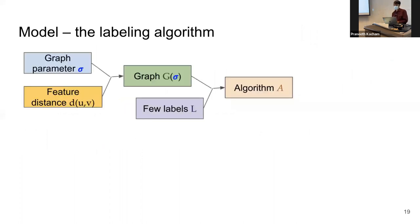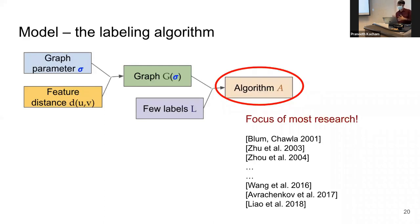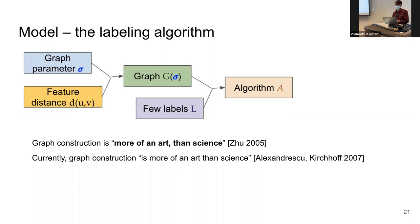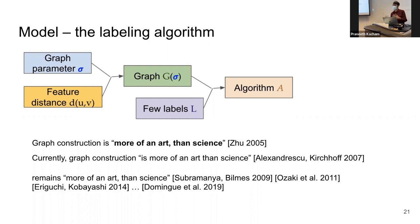Most research has focused on how to extrapolate labels given a fixed graph, and this remains an active topic. On the other hand, the question of how to build the graph has been considered more of an art than a science — this was the state about 20 years ago, and people have noted it over the years. Even today, there are no principled ways of building the graph. We want to make a step in this direction: give a principled algorithm with formal guarantees for selecting the graph parameter, making graph construction more of a science.